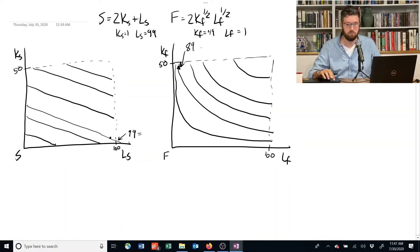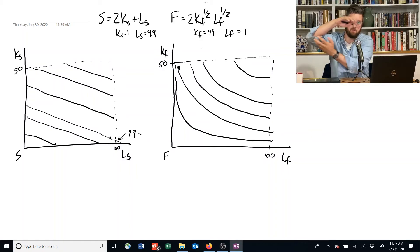To figure that out, we're instead going to merge these two diagrams into one diagram called an Edgeworth box. And to do that, we're going to take one of the other ones, one of the two diagrams, rotate it and merge it on top.